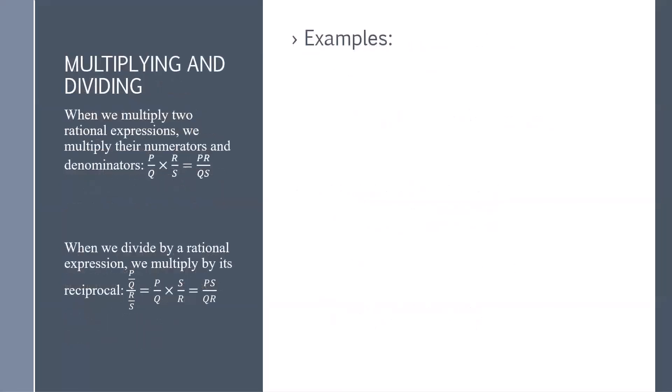When we multiply two rational expressions, we multiply their numerators and denominators. So p over q times r over s is p times r divided by q times s.